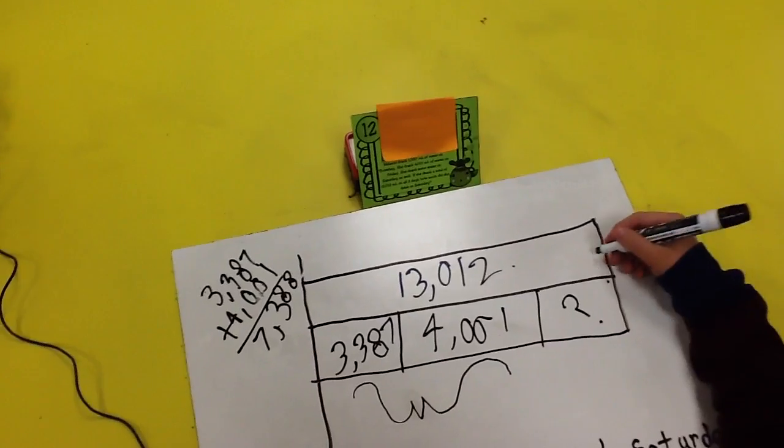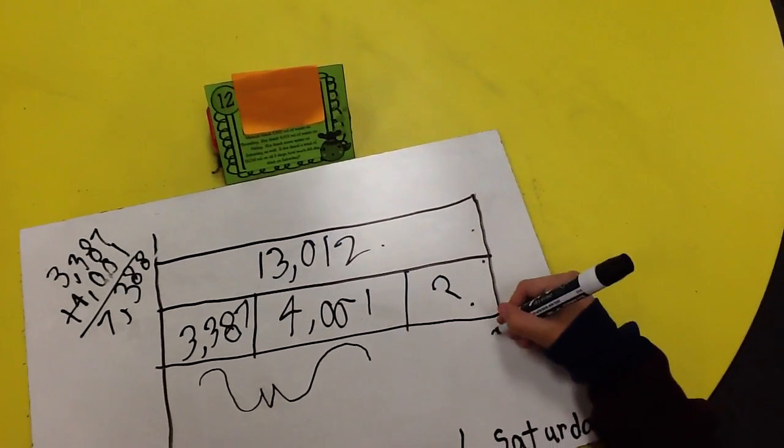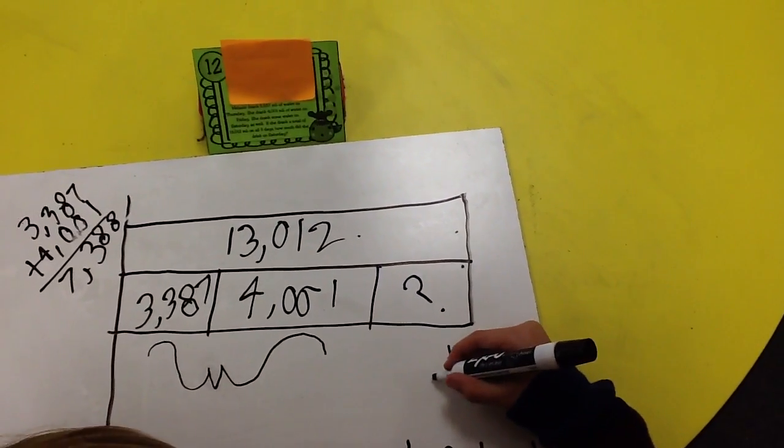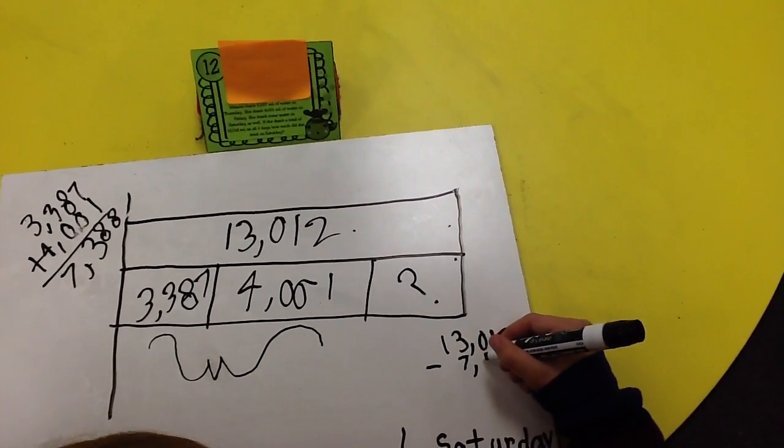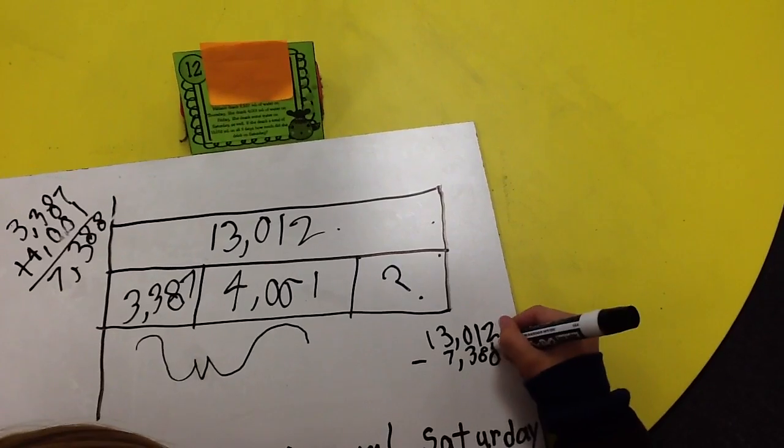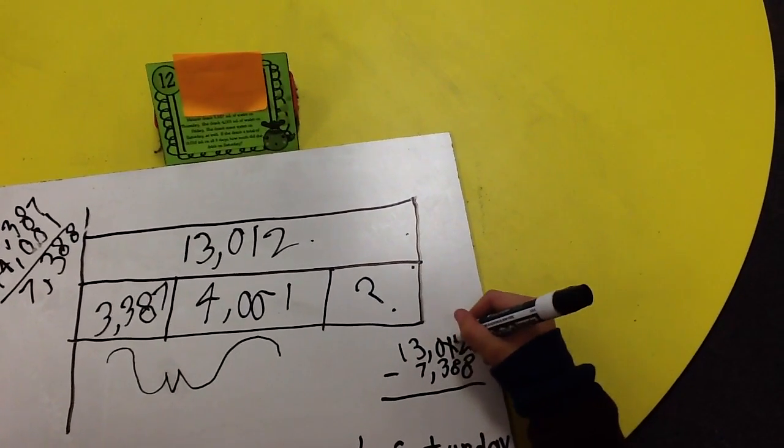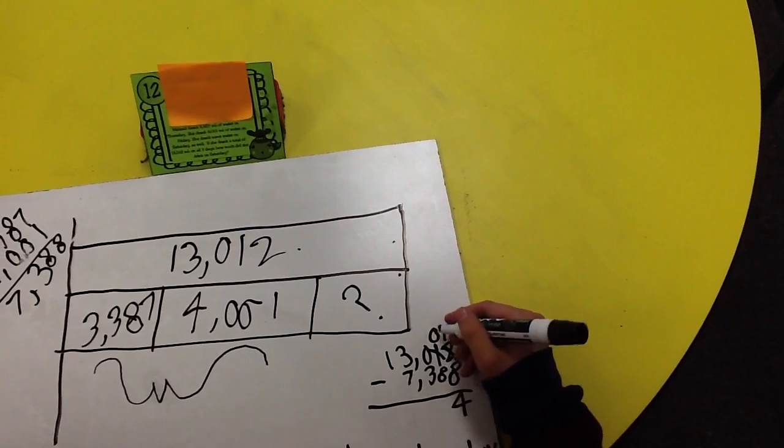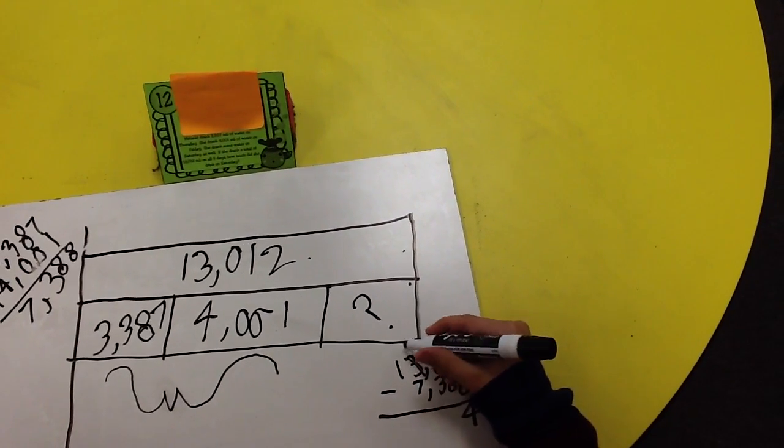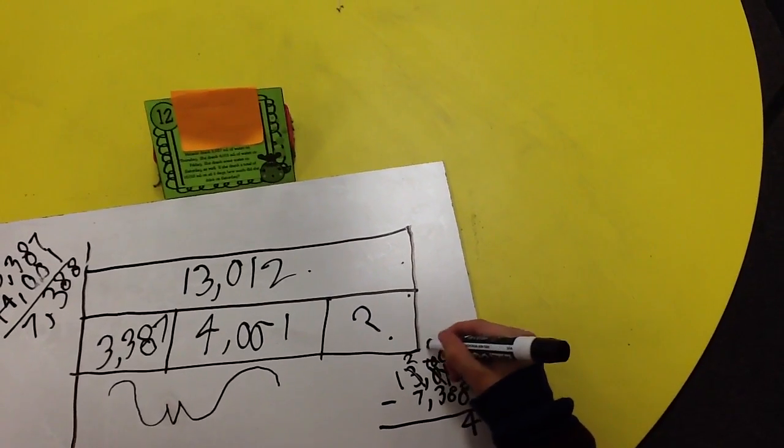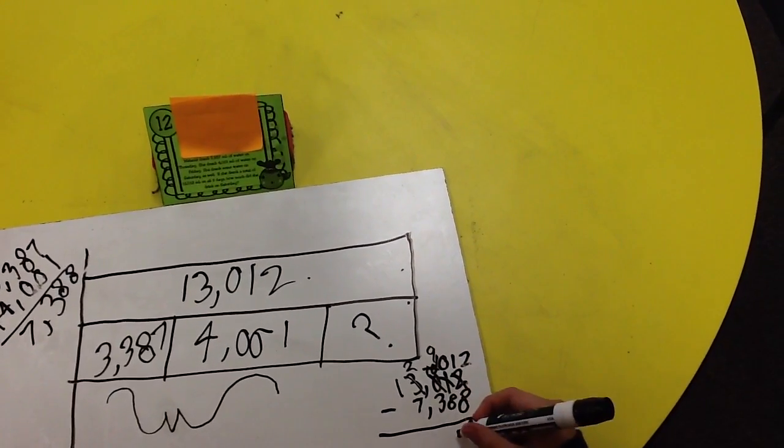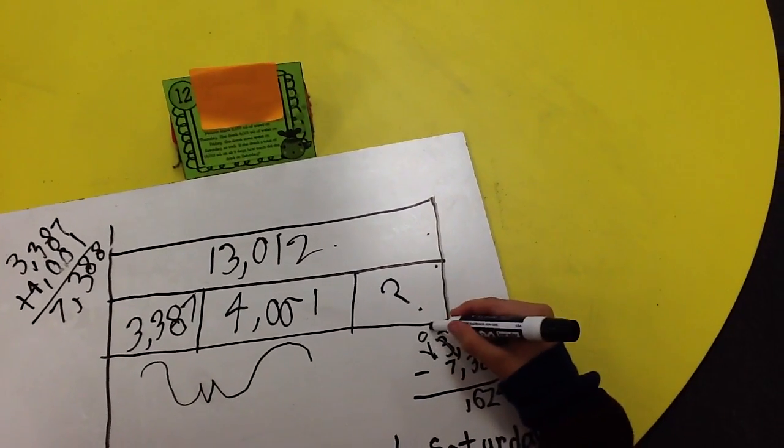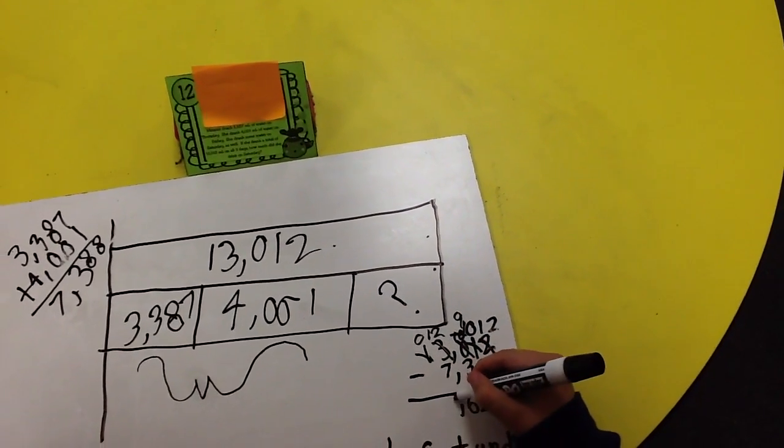Now we need to subtract it from the big piece, and that should give us Saturday. So that's 13,012 minus 7,388. Can't do that, so up comes a 12, up comes a 0. That's 4. Still can't do it. Minus 8 is 2, and minus 3 is 6. 12 minus 7 is 5.